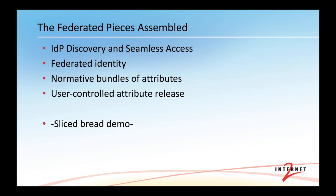So, federated identity — some important pieces have slid in. It's now a somewhat complete user experience. There's identity-provider discovery that is consistent among sites via the Seamless Access work. There's federated identity itself. There's the emergence of some normative bundles of attributes that are of particular interest in the library space. And now there are finally the beginnings of deployment of user-controlled attribute release capabilities. We'll cover each of those briefly and then we'll do a demo of how they fit together in something called sliced bread.